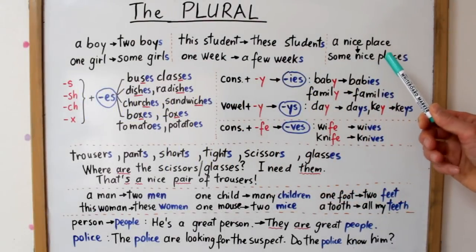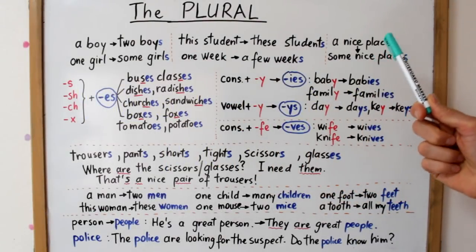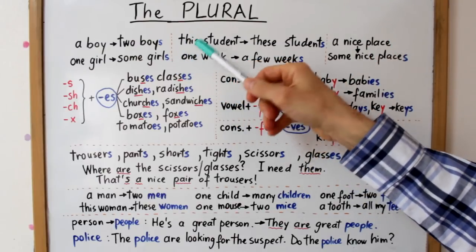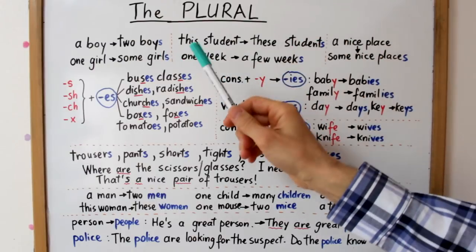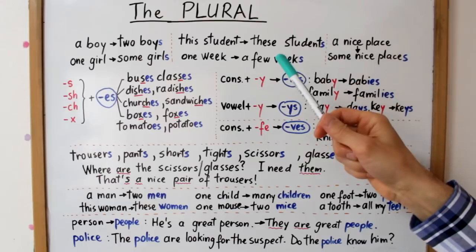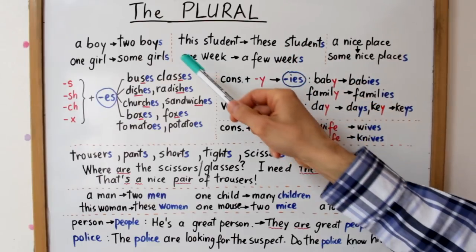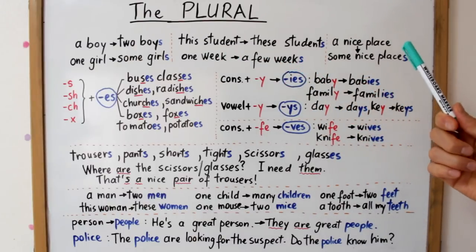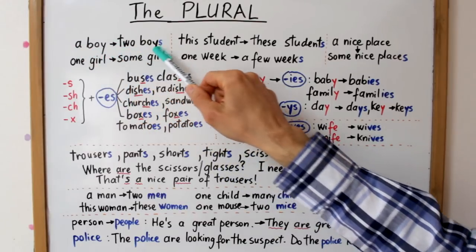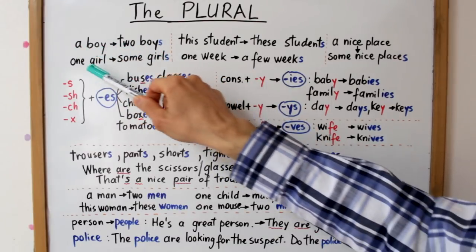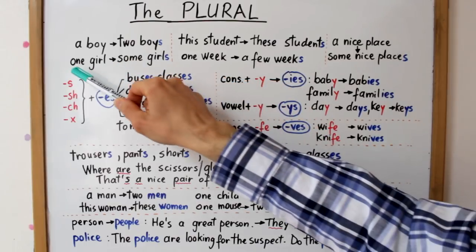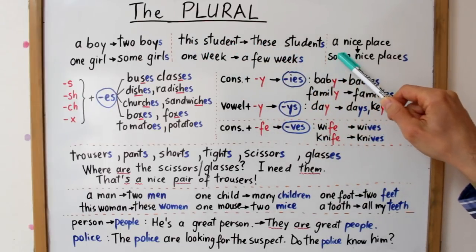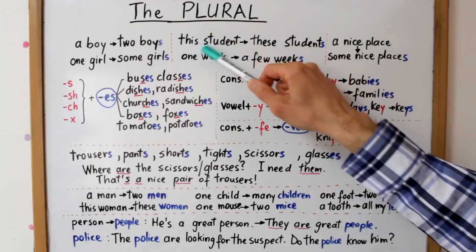Iată câteva exemple simple din care se deduce modul cum se formează pluralul în engleză — prin adăugarea terminației S la forma de singular. Observăm și chestiunea de pronunție: uneori S se pronunță S, alteori Z. Exemple: a boy / two boys (un băiat / doi băieți); one girl / some girls (o fată / niște fete); this student / these students — iată S pronunțat S.